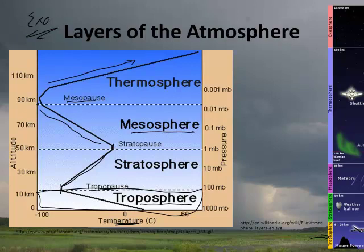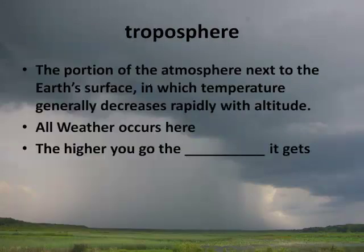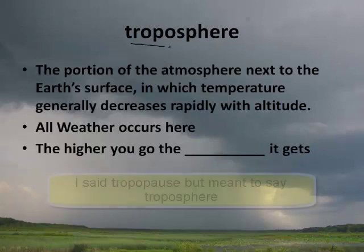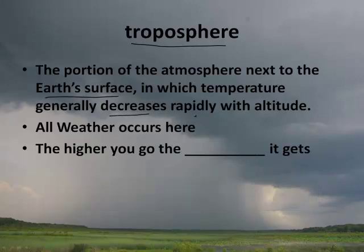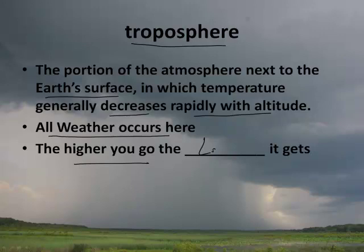The troposphere is the portion of the atmosphere next to Earth's surface in which the temperature generally decreases rapidly with altitude. All weather occurs here. The higher you go, the lower the temperature gets.